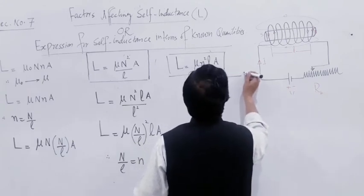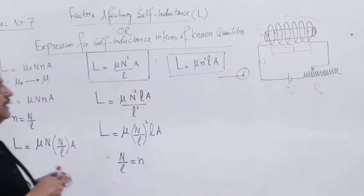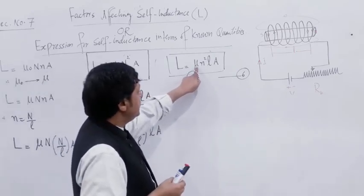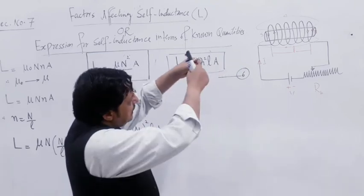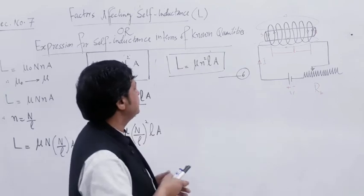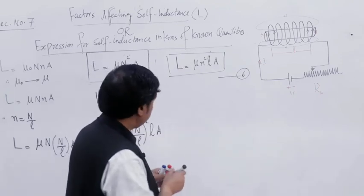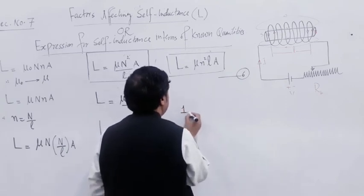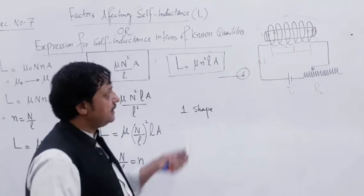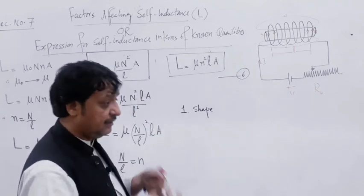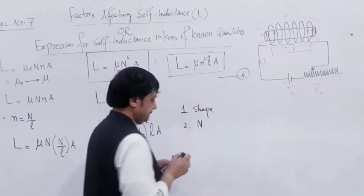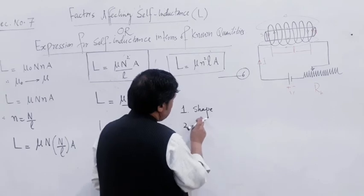Looking at this formula, mu is the permeability of the material upon which the coil is wound. So what factors does self-inductance depend on? Number one: it depends upon the shape of the coil. If you change the shape — for example, instead of a solenoid take a toroid, square, rectangle, or circular coil — it depends on shape. Number two: it depends upon the number of turns. But the actual quantity is the number of turns per unit length.